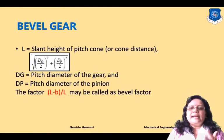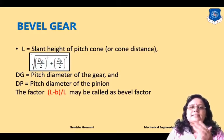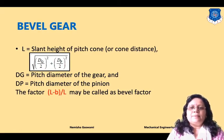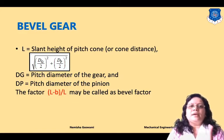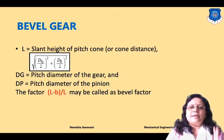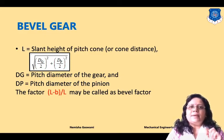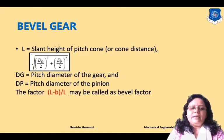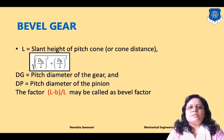The slant height of the pitch cone, also called cone distance L, is given by: L = √((dg/2)² + (dp/2)²). Using the pitch diameters of pinion and gear you can find the slant height. Here dg is pitch diameter for gear and dp is pitch diameter for pinion. The factor (L − b)/L is known as the bevel factor.